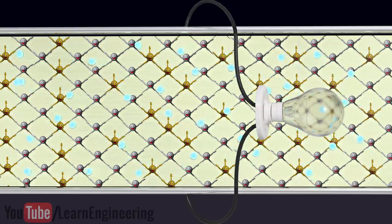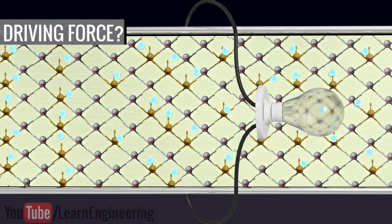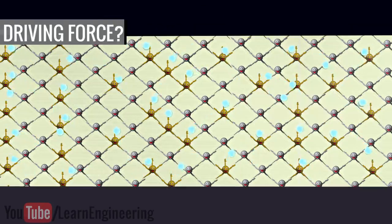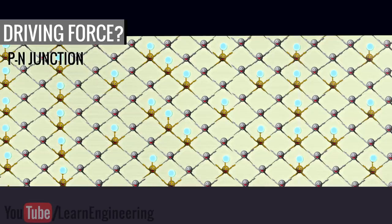To make the electron flow unidirectional, a driving force is needed. An easy and practical way to produce the driving force is a p-n junction. Let's see how a p-n junction produces the driving force.